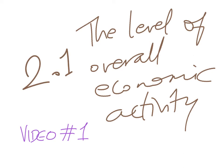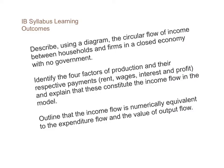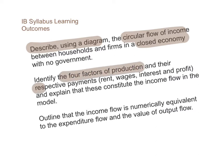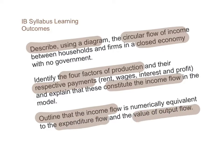This will be the first video in macroeconomics in the IB economics syllabus, focusing on unit 2.1: the level of overall economic activity. The learning outcomes for this video are: describing using a diagram the circular flow of income in a simple and closed economy, identifying the four factors of production and their respective payments, and outlining the income flow and its numerical equivalence to the expenditure flow and the value of the output flow.